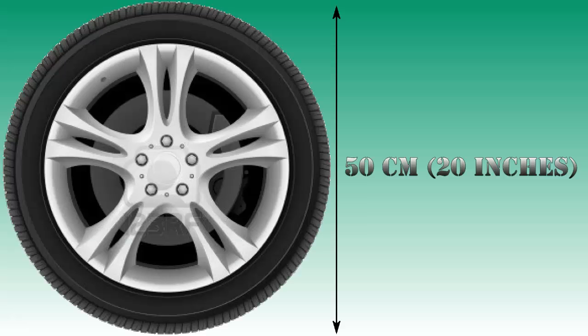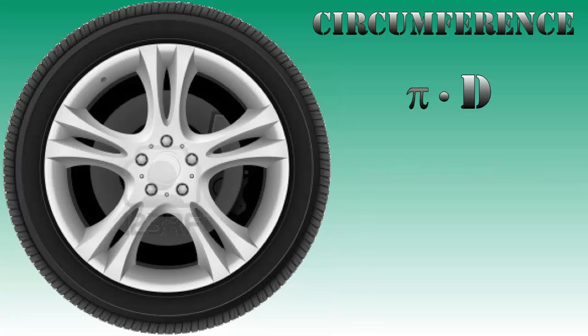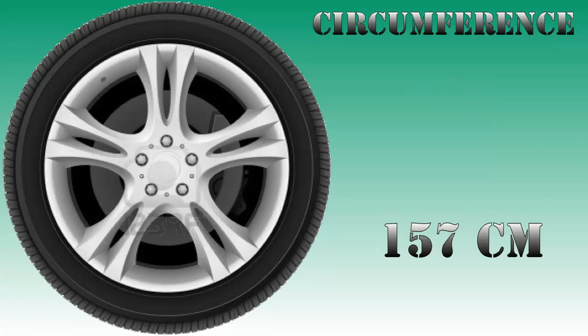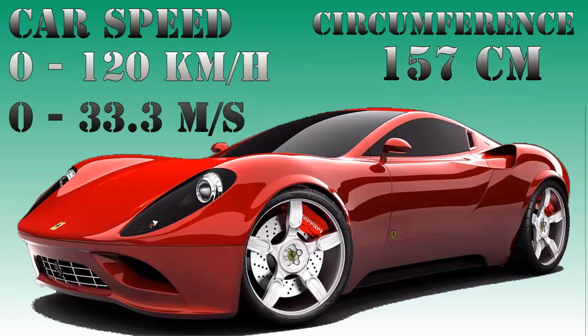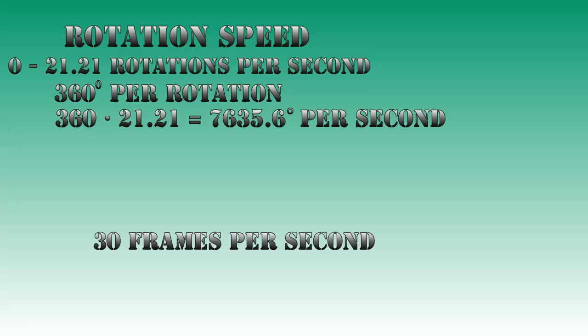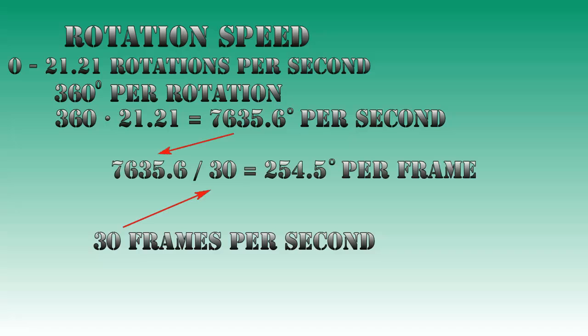Let's do a little calculation. A car wheel is about 50 centimeters or 20 inches in diameter, meaning it has a circumference of π times d, which is 157 centimeters. With the speed of a car being between 0 and 120 kilometers per hour — or 0 to 33.3 meters per second — the wheel rotates at a speed of 0 to 21.21 rotations per second. A camera normally shoots 30 frames per second, meaning there is 0 to 254.5 degrees of rotation between photos.